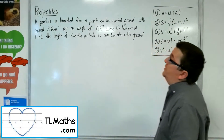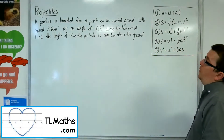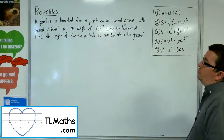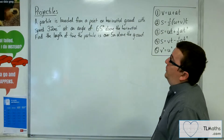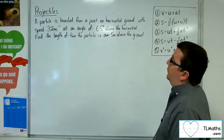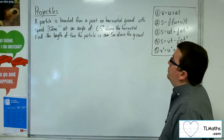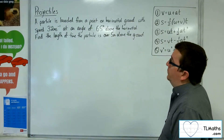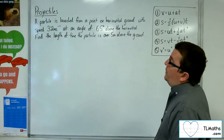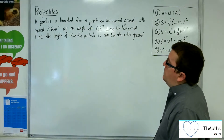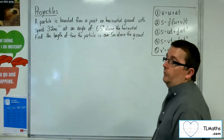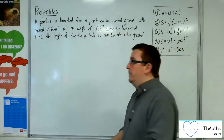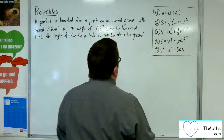In this video, a particle is launched from a point on horizontal ground with speed 32 metres per second at an angle of 65 degrees above the horizontal. Find the length of time the particle is over 5 metres above the ground.